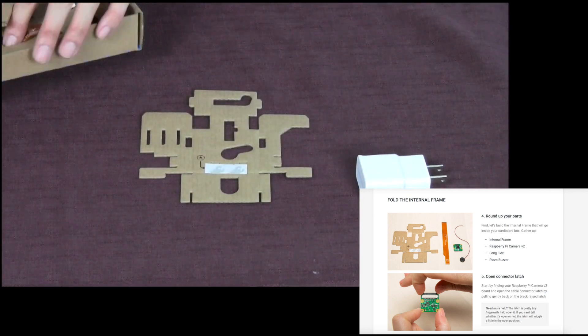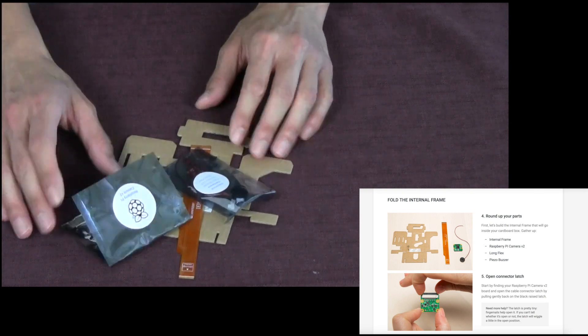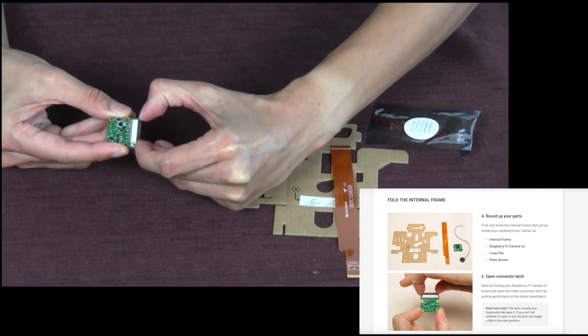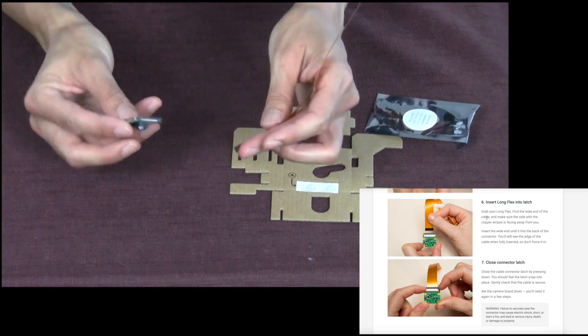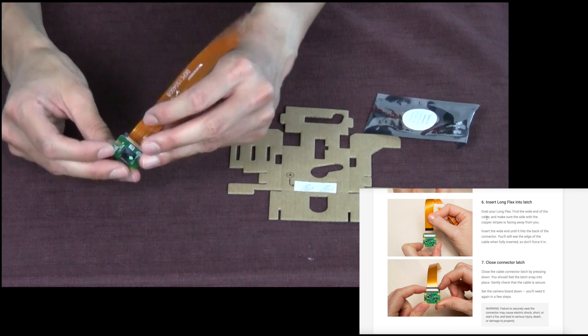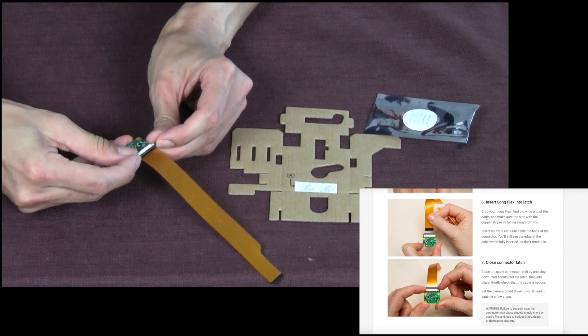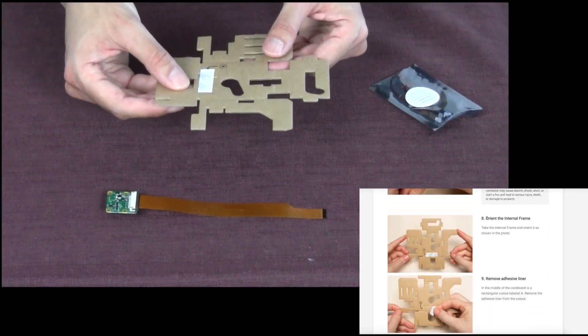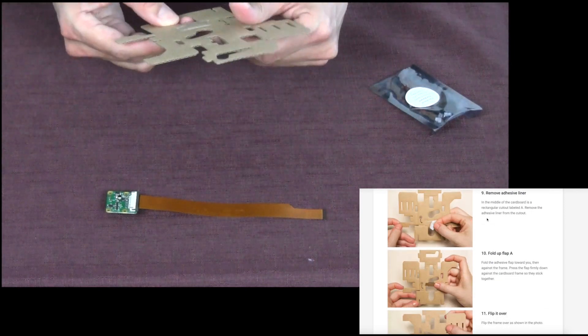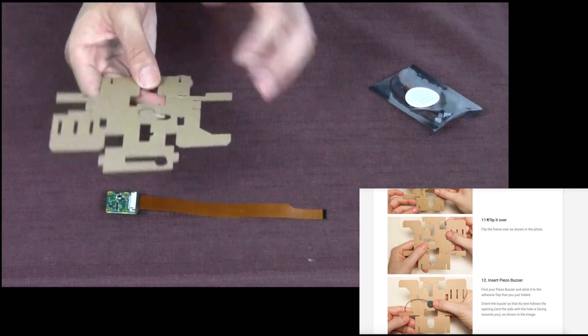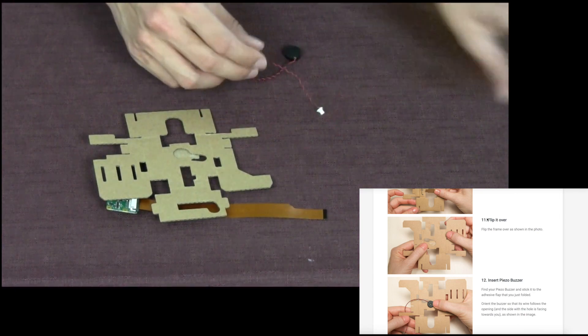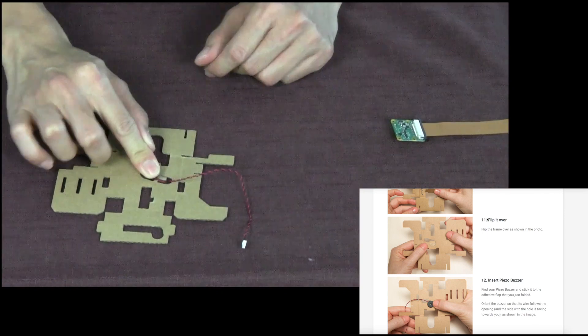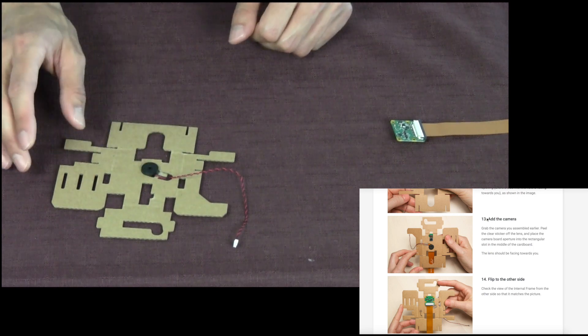First we're going to build the internal frame. Pull the connector hatch up a little bit. Fingernails are good. We're going to insert the long flex into the hatch. So here is our long flex. We're going to insert it with the black on top and the connections facing down, and then we're going to close the connector hatch and flip it over. Now I can see part of that adhesive right there. And now we're ready to add the camera.